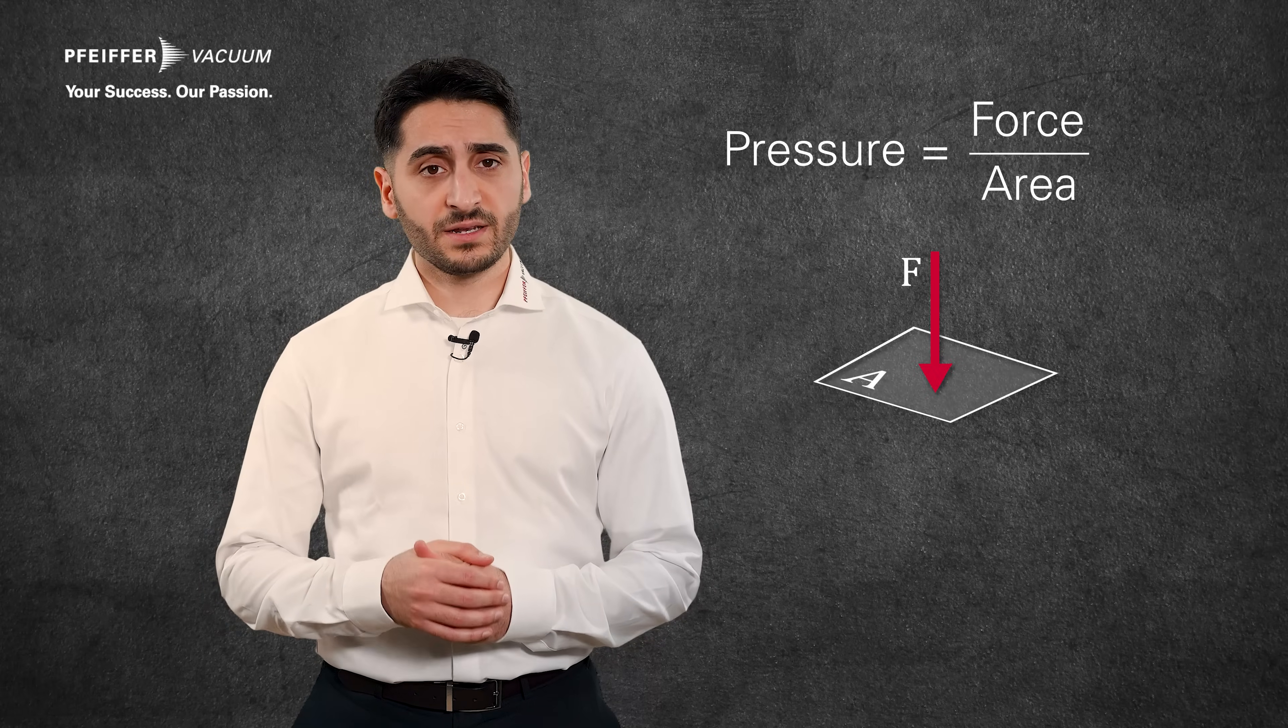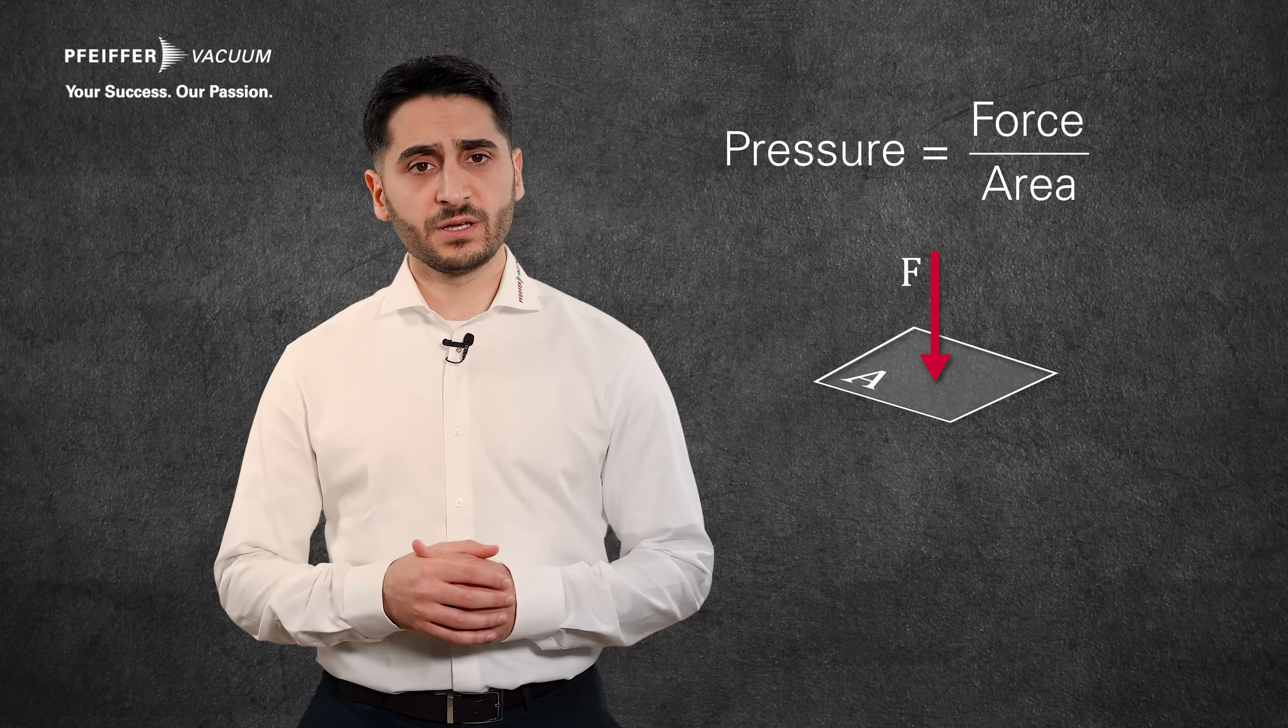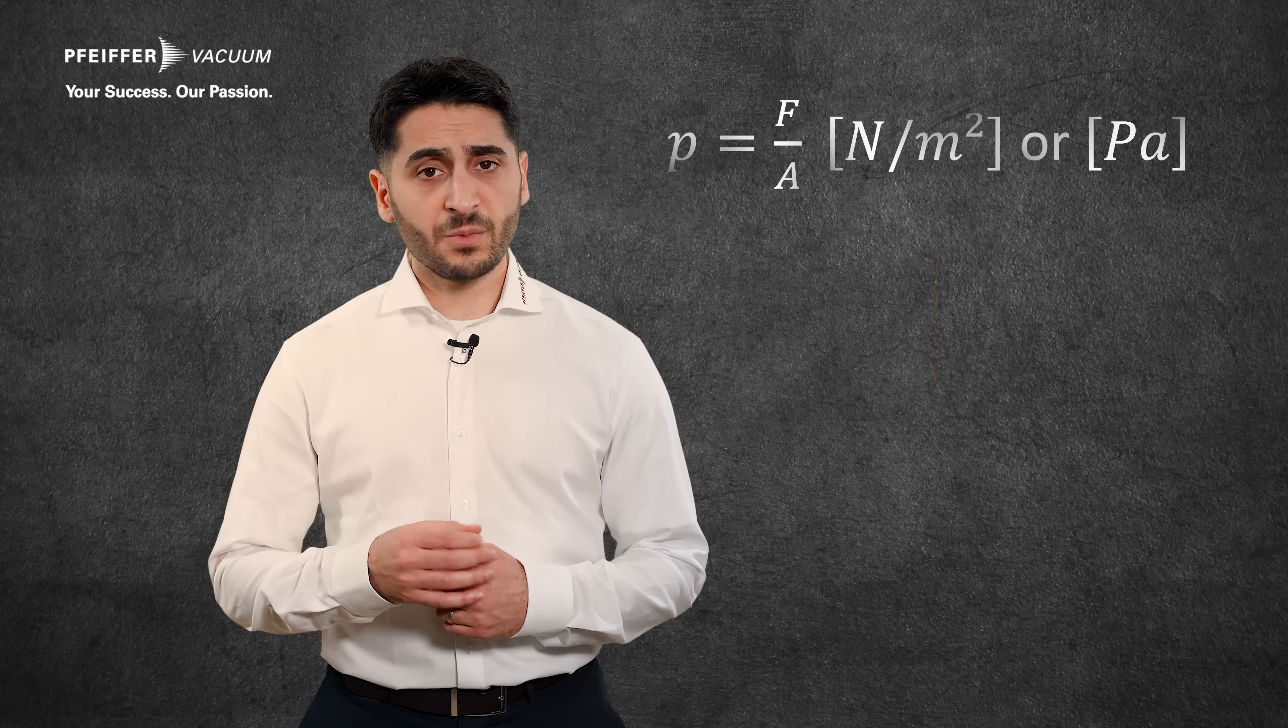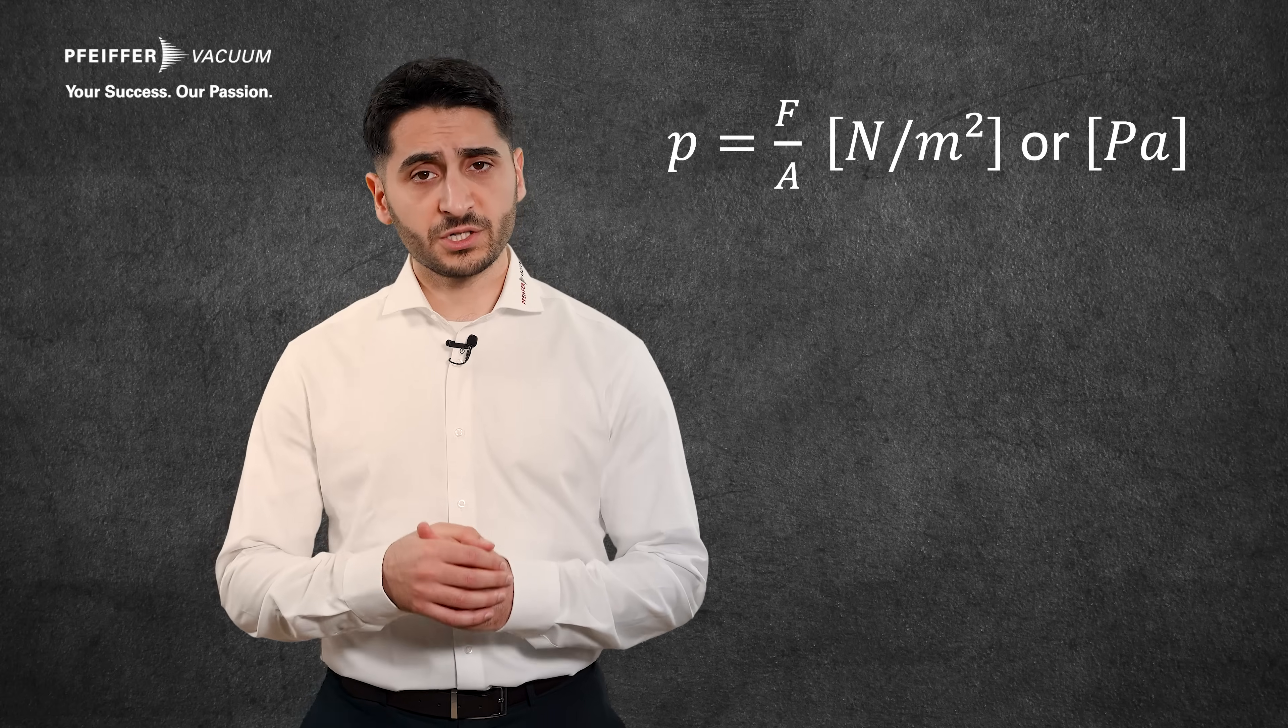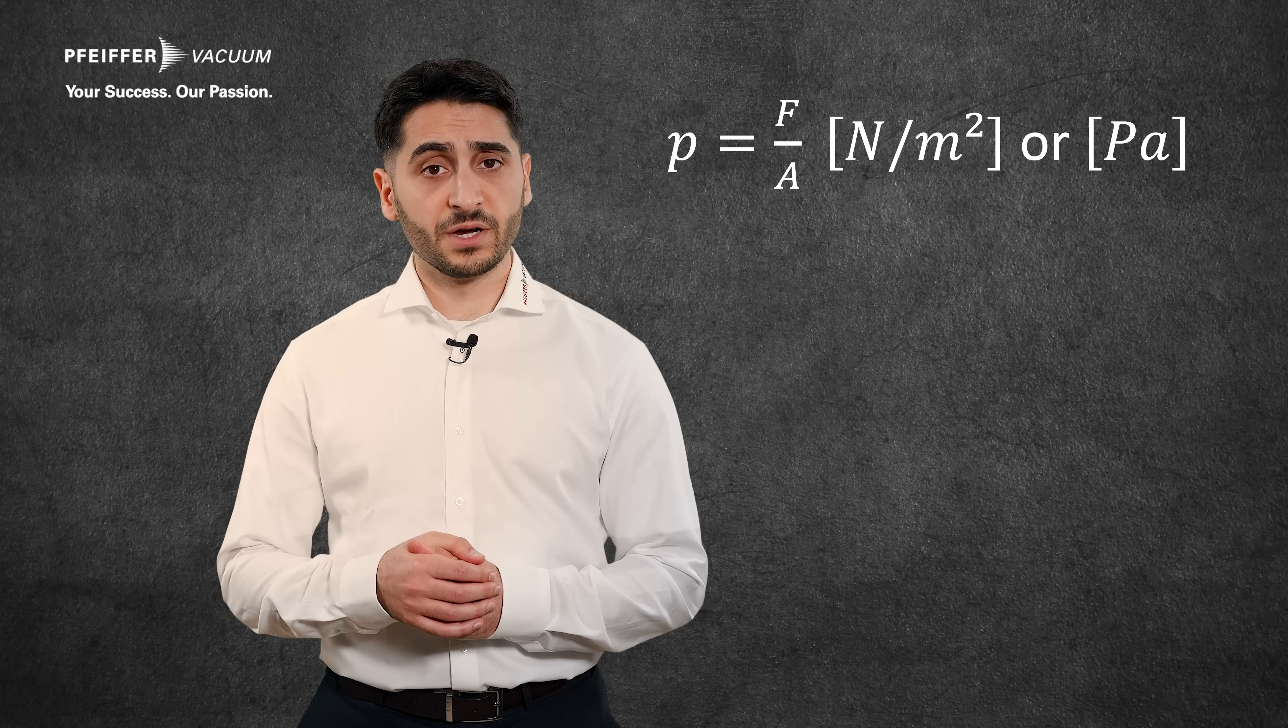In general, pressure is defined as the effect of a force acting vertically and uniformly on a surface. A small p is used as the formula symbol for pressure, capital F for the force, and capital A for the surface or area.